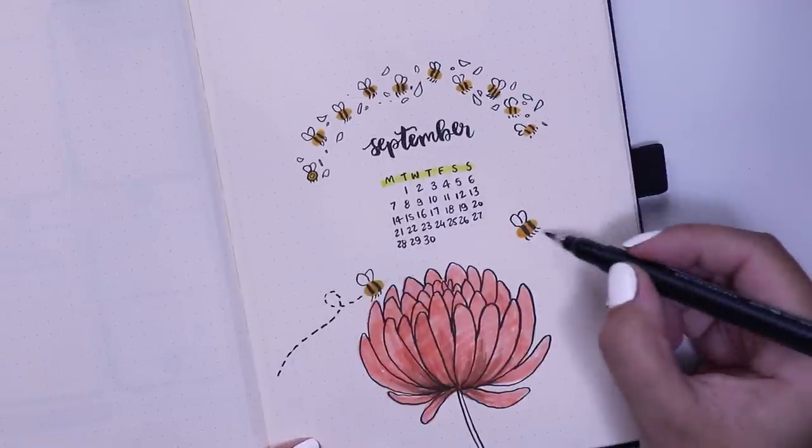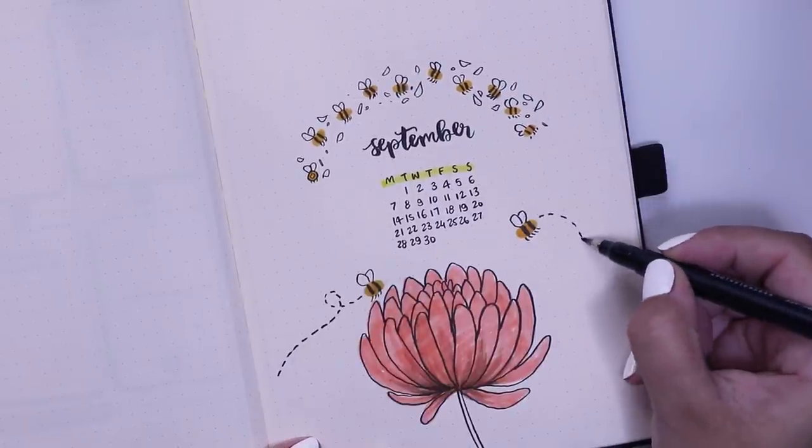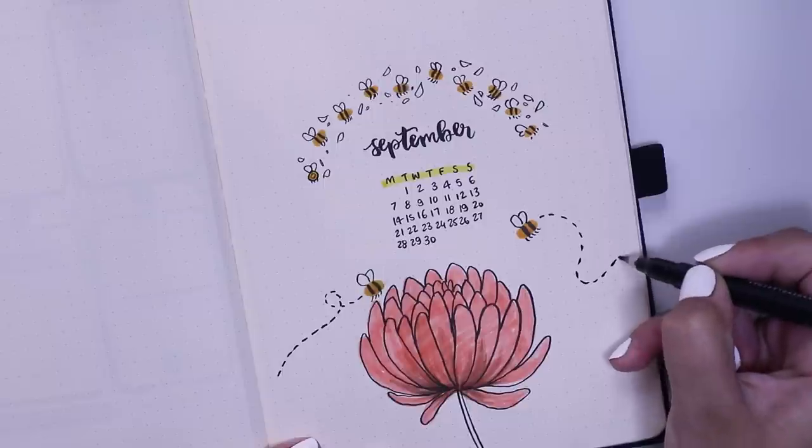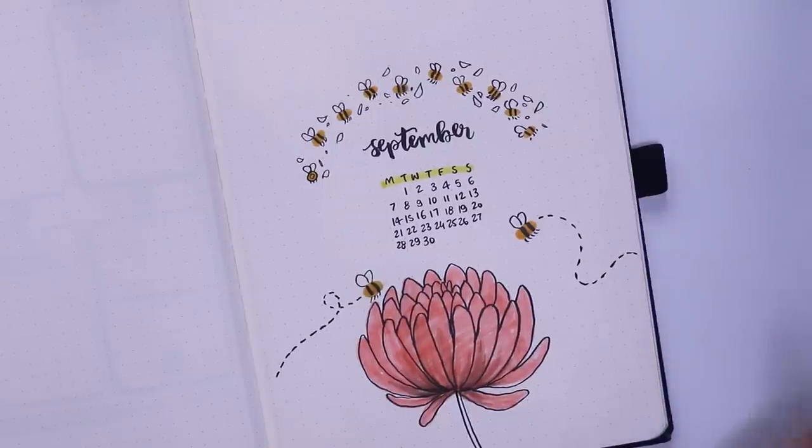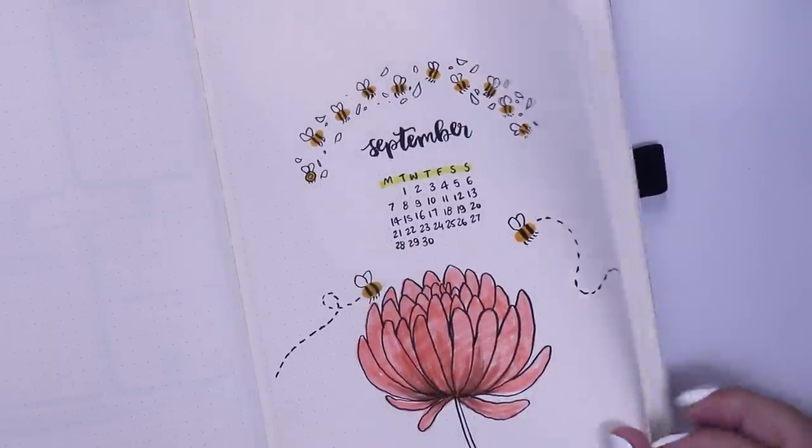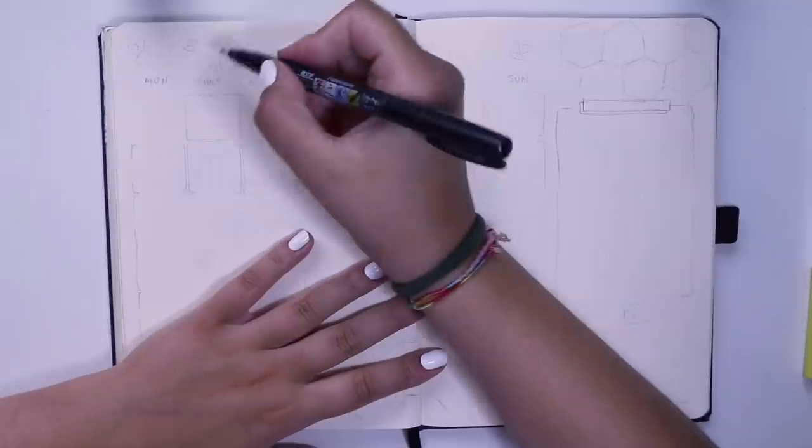I'm mainly using two Crayola super tip colors, one in an orangey yellow and one in a very bright yellow. Those are pretty much the two colors I used for this month.